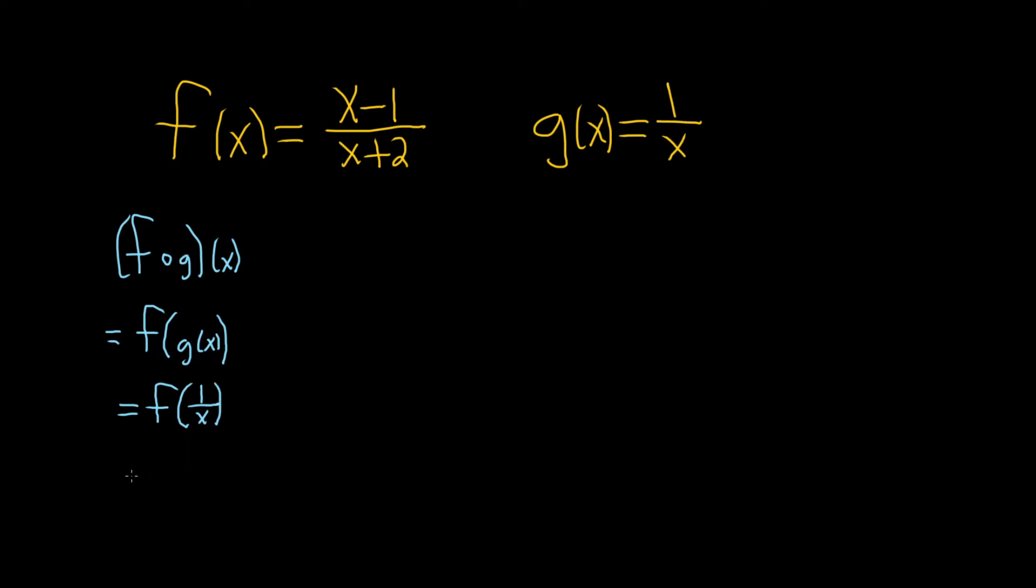So now what we can do is we can look at f. So f of x is x minus 1 over x plus 2. Here we have f of 1 over x. So what that basically means is that we replace all of the x's with 1 over x.